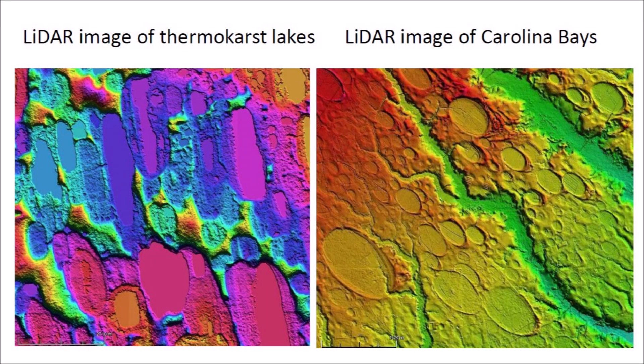This side-by-side comparison of LiDAR images of Alaskan thermokarst lakes and Carolina Bays shows two completely different types of landscapes. The thermokarst lakes have ragged edges and irregular shapes, whereas the Carolina Bays have smooth elliptical shapes with raised rims. The Carolina Bays do not have unusual shapes like ducks, arrowheads, or planarian worms. They are mostly elliptical, except when they have been modified by erosion or movement of the terrain.